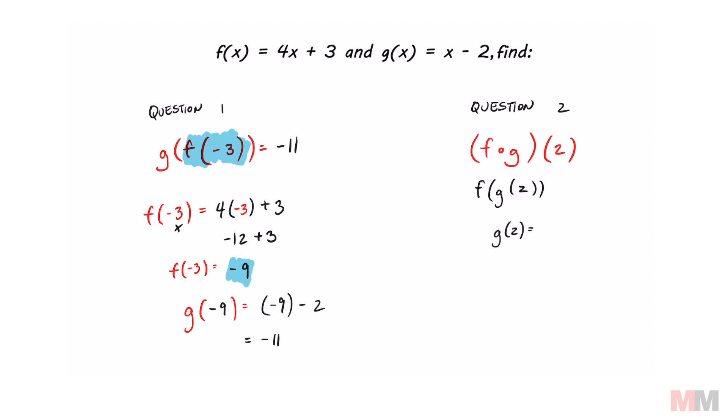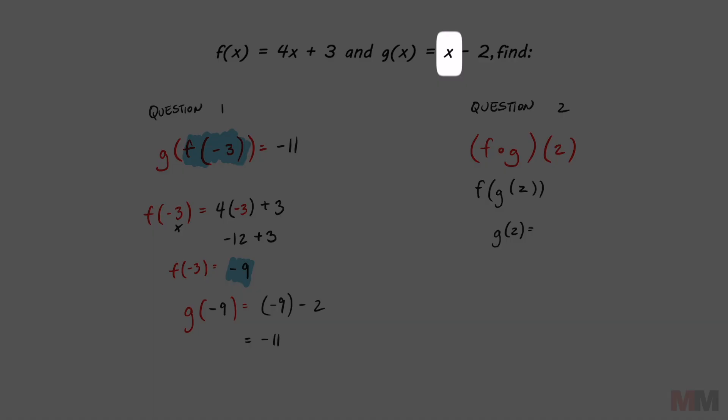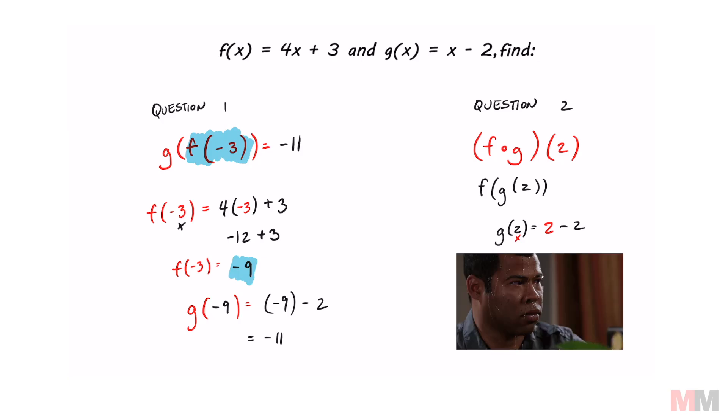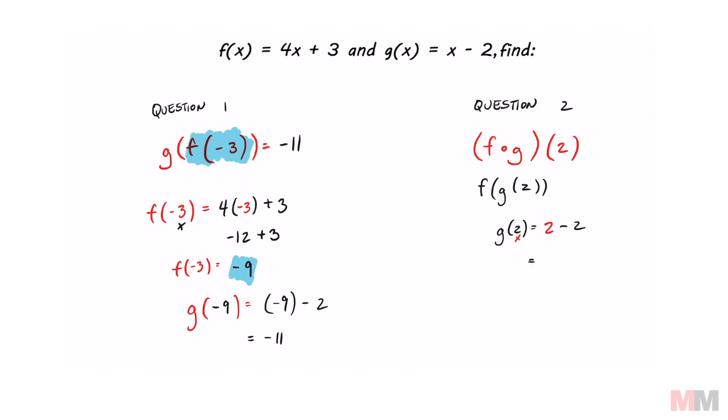So to calculate that, we're just going to replace that x value with a two because that's my input. And don't freak out. Sometimes you get zero as an answer. Doesn't mean it's wrong. G of two equals zero.